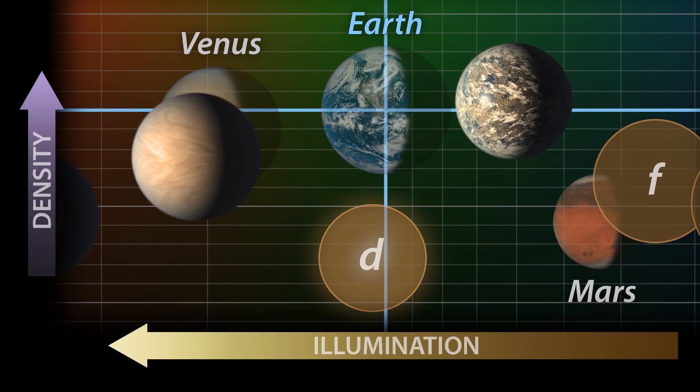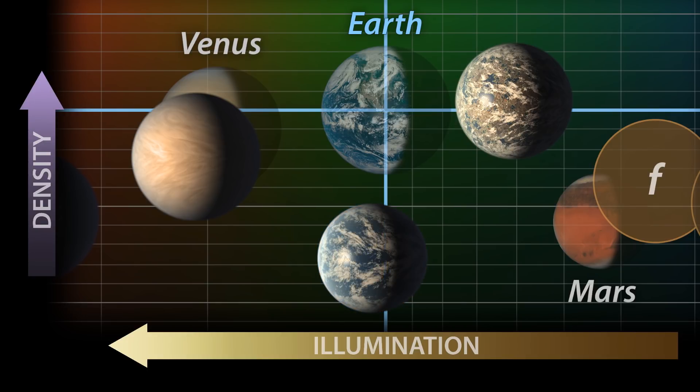Between them, TRAPPIST-1d has about the same illumination as Earth, but is smaller and less dense. Theories of planetary composition suggest that up to 5% of its mass could be in the form of water, possibly covering it in an ocean vastly deeper than any deep sea trench found on Earth.